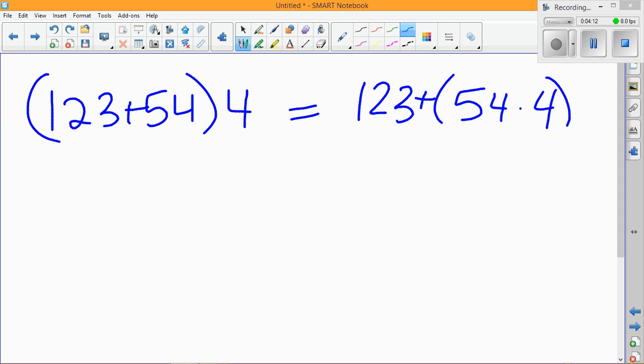I'm going to start in the parentheses because that's always my first step. Remember, when we check, we need to use PEMDAS. So 123 plus 54 is 177 times 4. And again, we need to do parentheses first, so 54 times 4—four times 4 is 16, carry the one, four times 5 is 20, plus one more is 21.